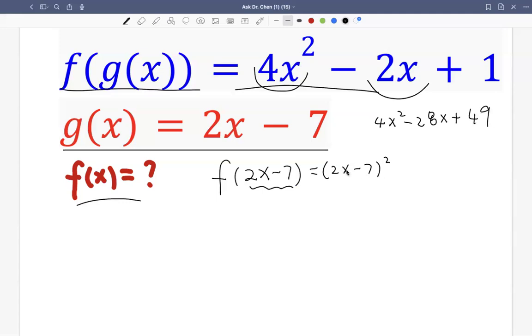So we have subtract 28x from here, so we need to add back 28x. And then we subtract 49 here, so we have a minus 49 here. So to be able to get this 4x squared, because we only had 4x squared to start with.